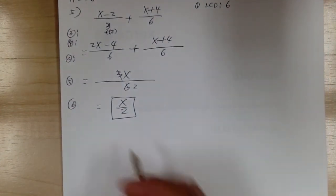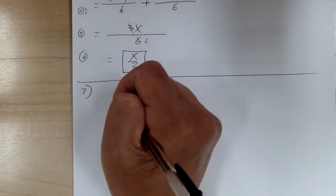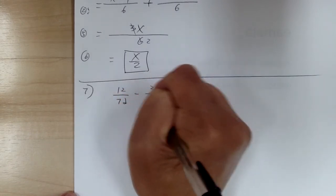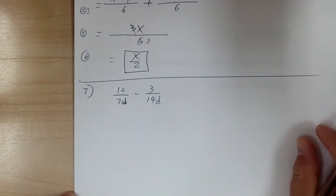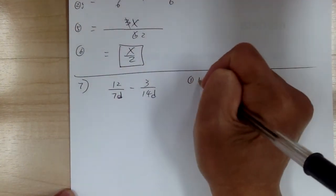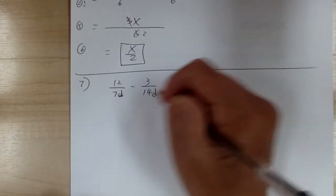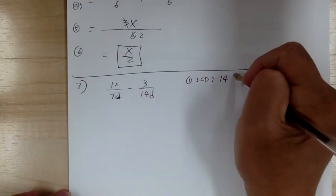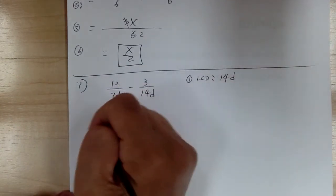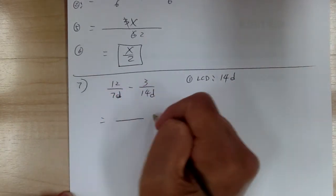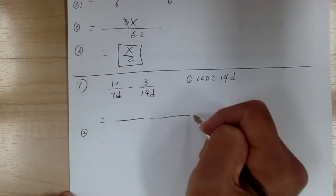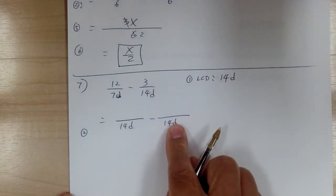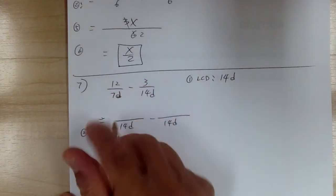Let's go to number seven. You have twelve over 7d minus three over 14d. Step one: get your LCD. You do the number and the alphabet separately. Seven and fourteen gives you fourteen; d and d gives you d. So your LCD is 14d. Step two: get your 14d template ready — always get your LCD down first before worrying about what's on top.